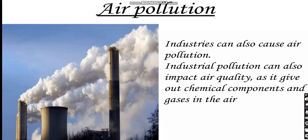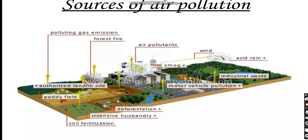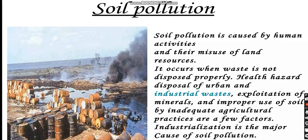Now we're going to jump into air pollution. Industrial pollution can also impact air quality, as it releases chemical components and gases into the air, as you can see in the picture. The sources of air pollution include ship pollution, which gives out gases called air pollutants, and the winds carry them along.